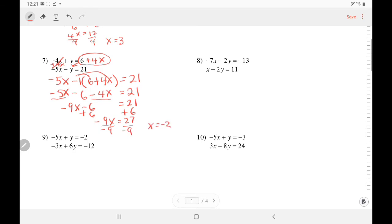So negative 3. Substitute it back where you circled. So y equals 6 plus 4. Plug in your negative 3. So y equals 6 minus 12. y equals negative 6. Present negative 3, negative 6. Let's do one more.